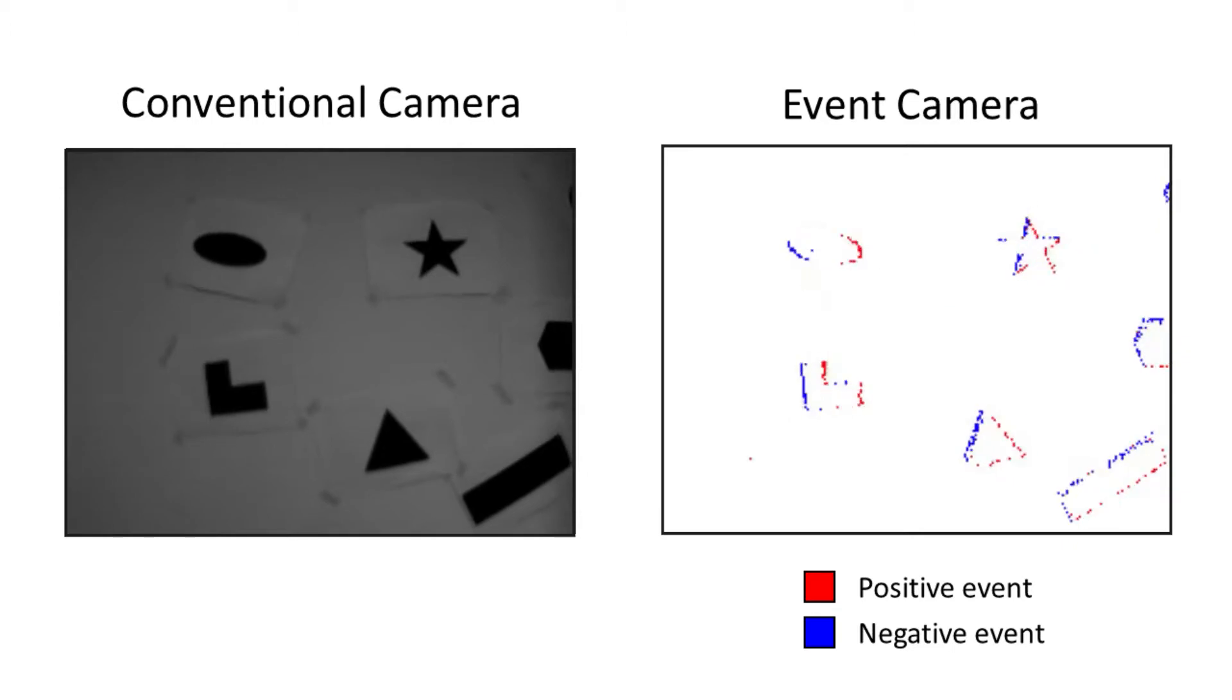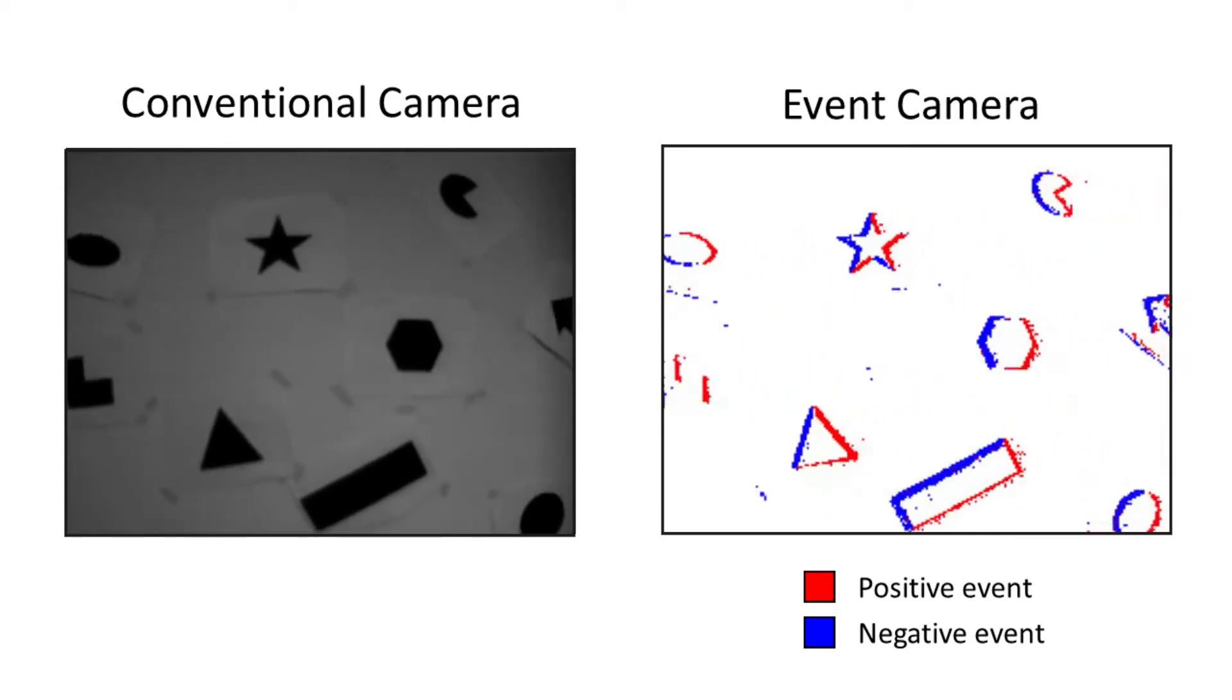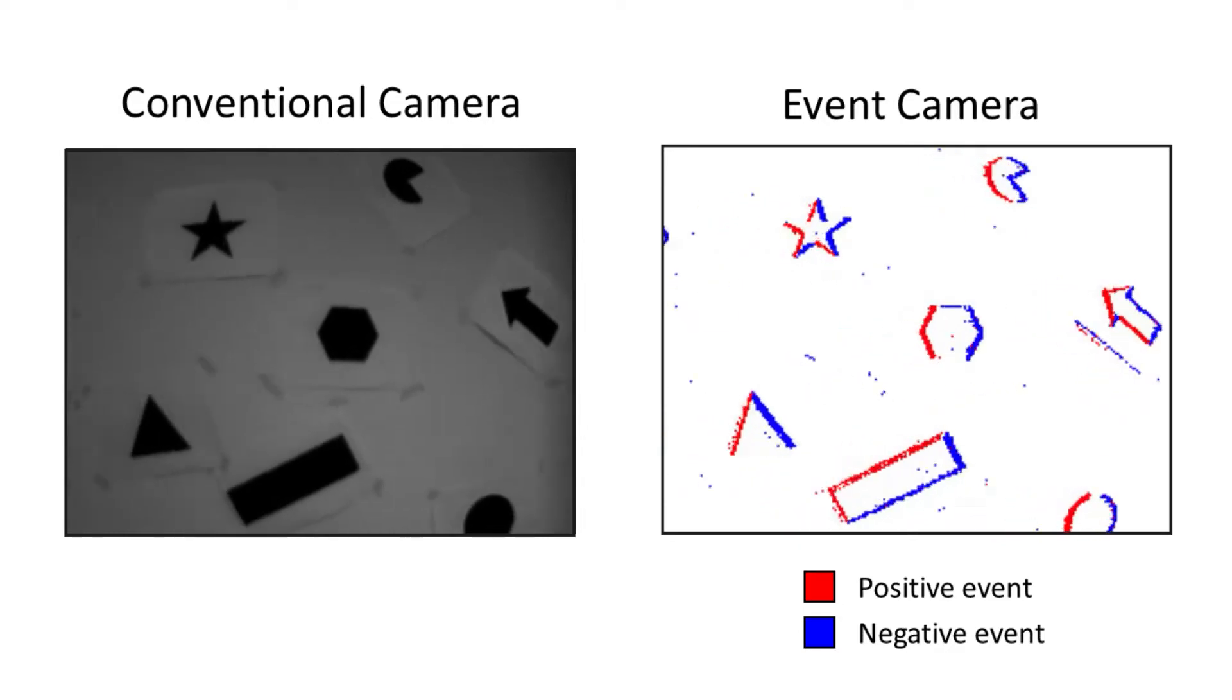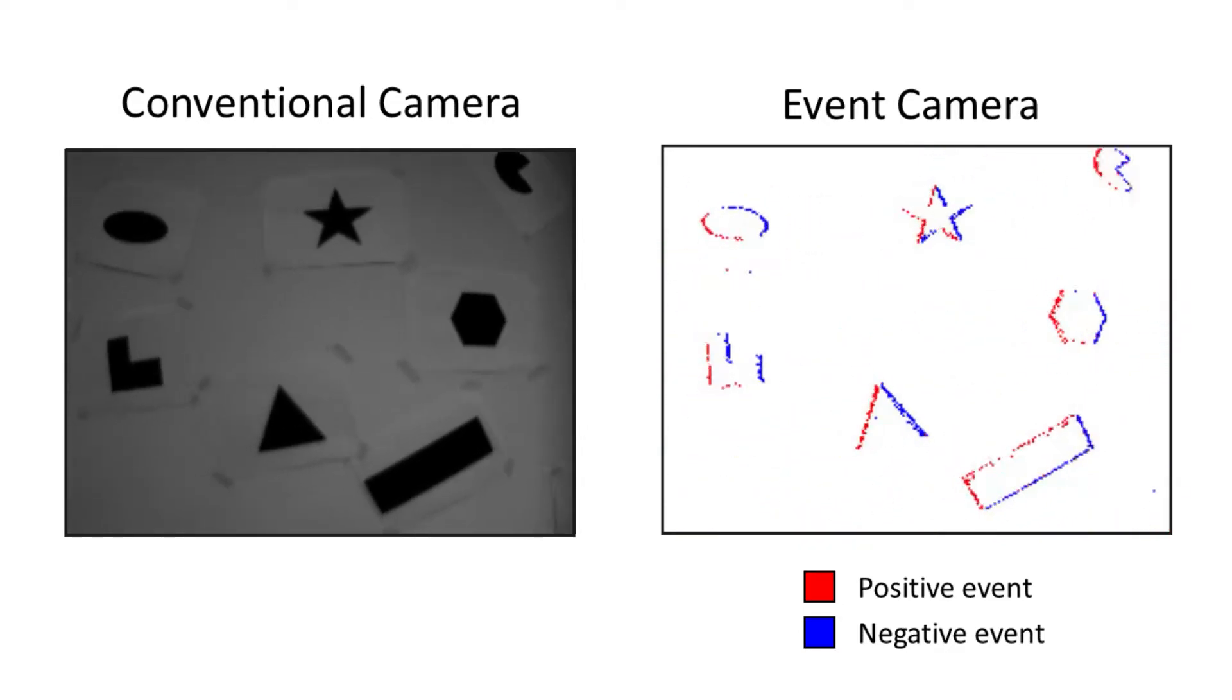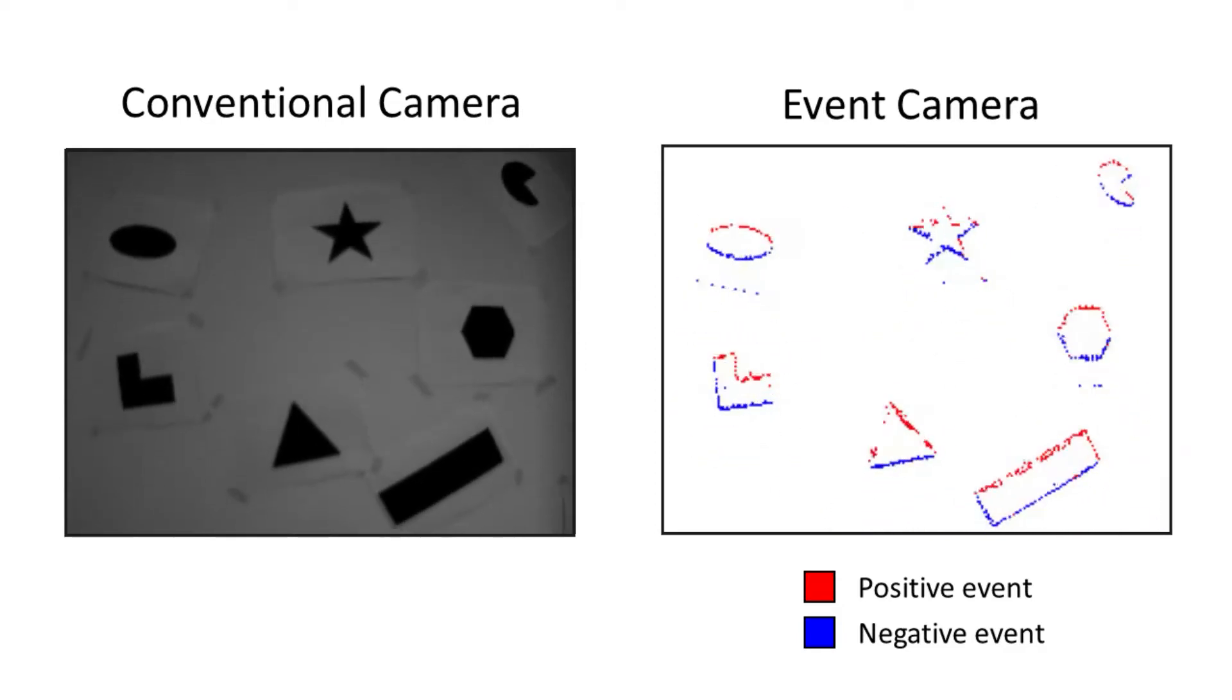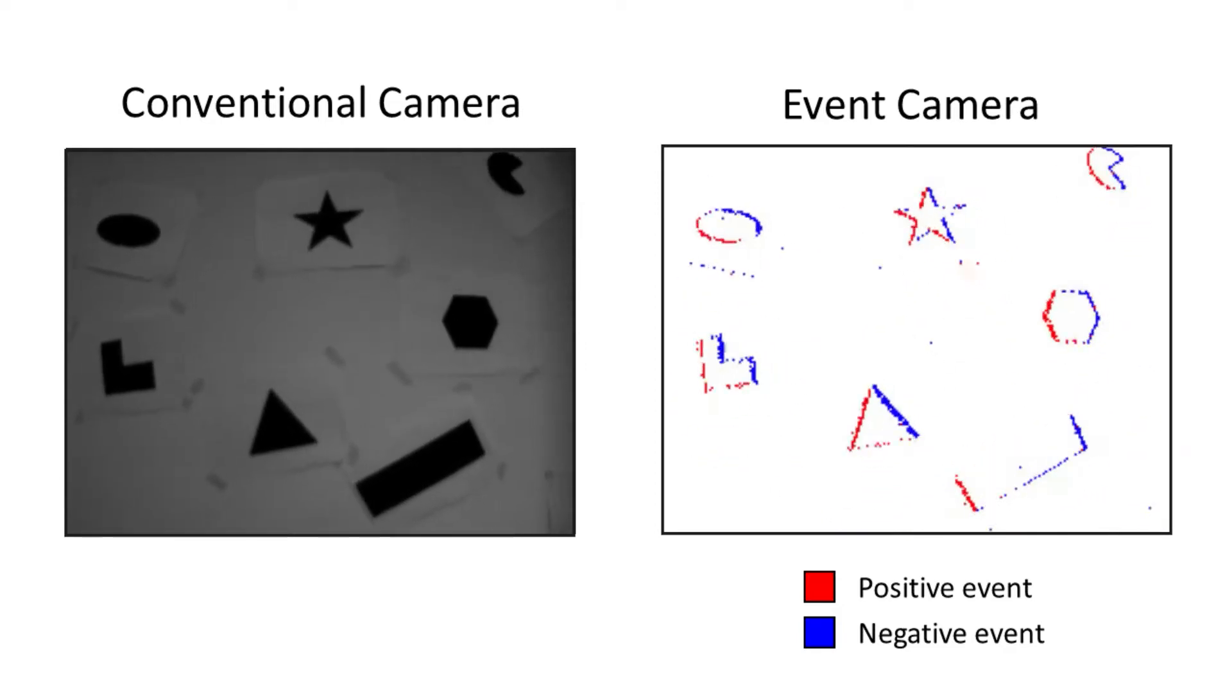In contrast, event cameras react to brightness changes, firing an asynchronous pixel-level event as soon as a change is detected. Events contain the pixel address, microsecond timestamp and polarity, indicating increase or decrease in brightness.